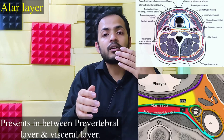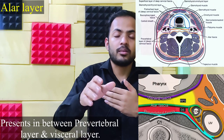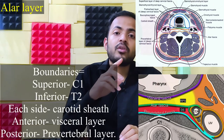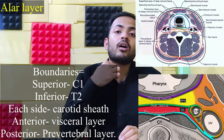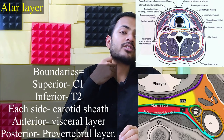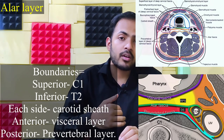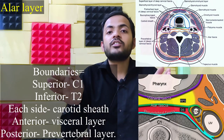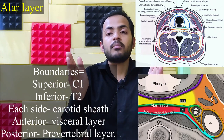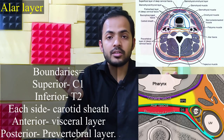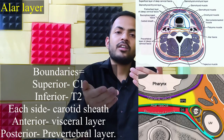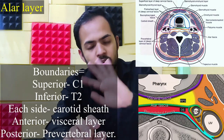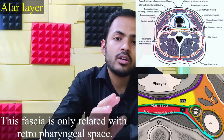The alar fascia or alar layer is present between the pre-vertebral layer and the visceral layer. Superiorly it is bounded by C1 — the first cervical vertebra — and inferiorly by T2, the second thoracic vertebra. On each side it is bounded by the carotid sheath, and anteroposteriorly by the visceral layer and the pre-vertebral layer. This fascia is only related to the retropharyngeal space.